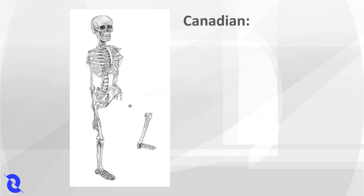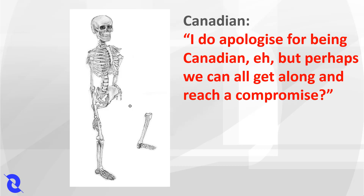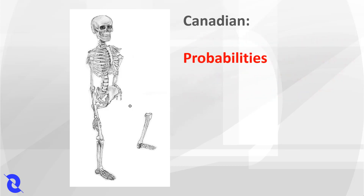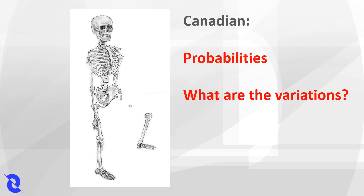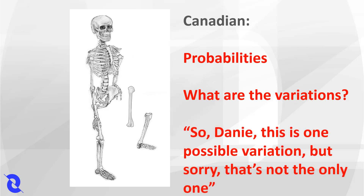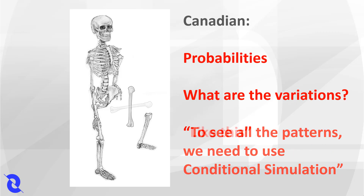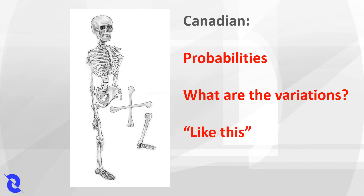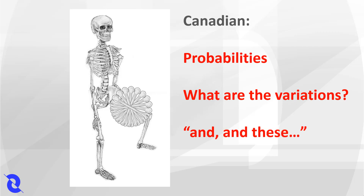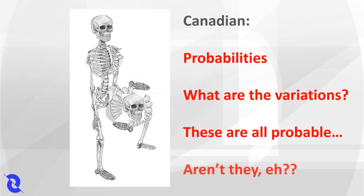The Canadian said, "I do apologise for being Canadian, but perhaps we can all get along and reach a compromise. Probabilities — that's all it's about. What are the variations? This is one possible variation, but that's definitely one. Like this, with conditional simulation. And these, and these, and maybe all these. These are all probable, aren't they?"